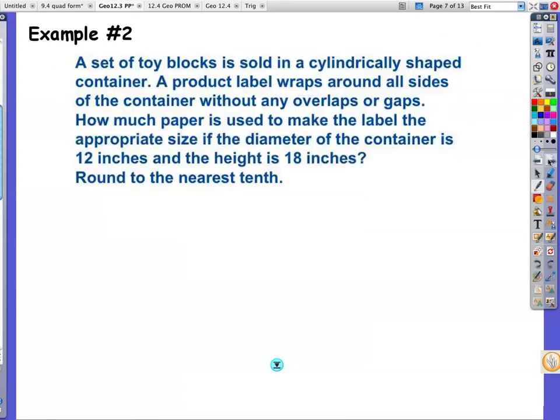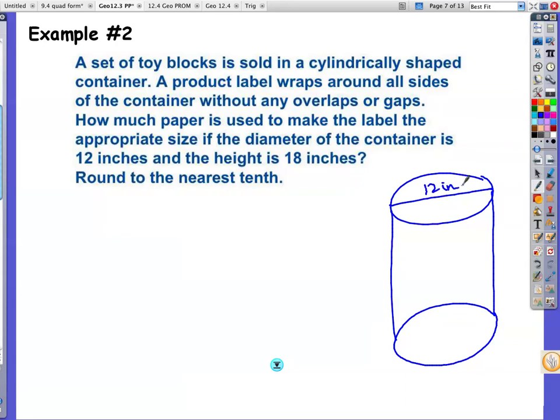Example number 2. A set of toy blocks is sold in a cylindrically shaped container. A product label wraps around all sides of the container without any overlaps or gaps. How much paper is used to make the label the appropriate size? If the diameter of the container is 12 inches and the height is 18 inches. So the diameter of the container is 12 inches. Oh, sneaky diameter, not the radius. And the height is 18 inches. And they're asking basically the paper on the outside. So the soup can has that paper on the outside. Lots of items that you buy in a cylinder have got a paper on the outside.